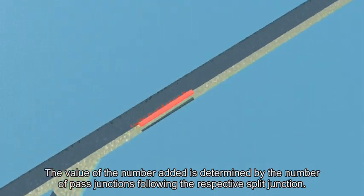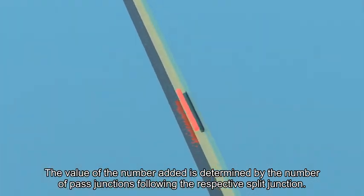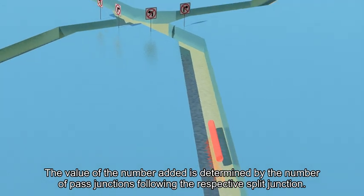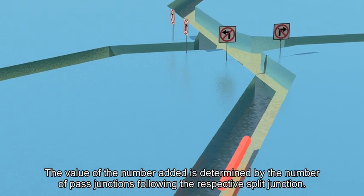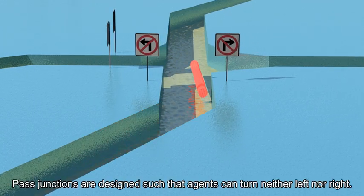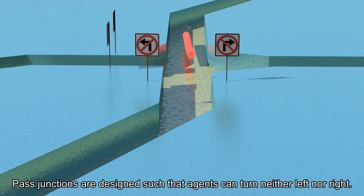The value of the number added is determined by the number of path junctions following the respective split junction. Path junctions are designed such that agents can turn neither left nor right.